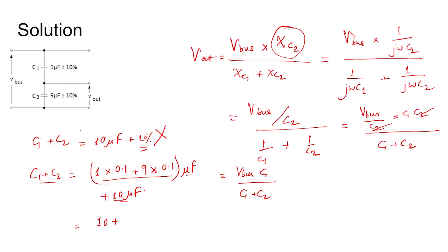So value plus error, absolute error, this is coming 10 plus or minus 1 microfarad. So this is 10 plus or minus 10 percent - 10 microfarad plus or minus 10 percent. This is the value of C1 plus C2.